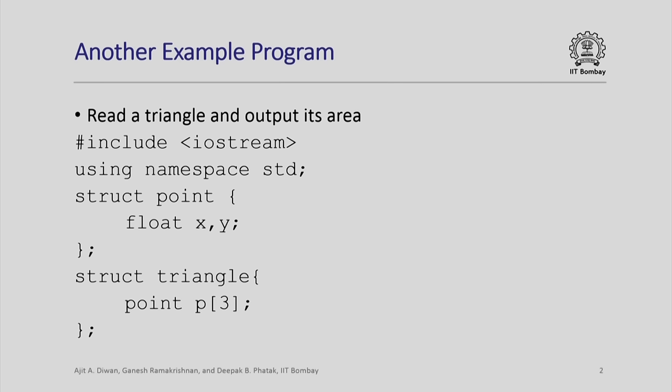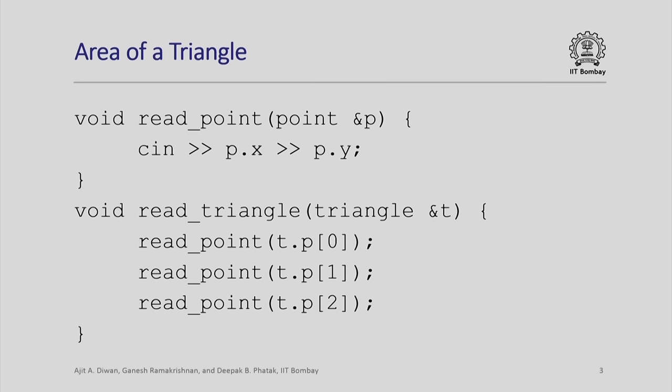We built more complicated data types using the built-in types and using constructs in C++ that allow you to define other types. These are some of the functions. Unlike integers where you have direct ways of reading in and writing them, you do not have functions for reading in points or reading in triangles. This is a function which just reads in a point — it takes the 2 coordinates of the point and assigns it to the corresponding fields of the point variable.